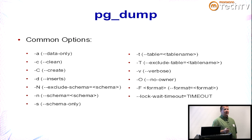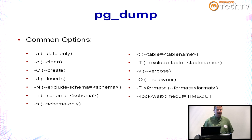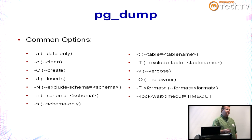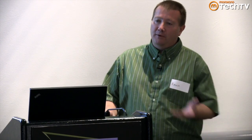Both the tar and custom formats give you the option of restoring via the pg_restore utility, which opens up a world of options in terms of flexibility — what objects, data structures, and data sets you want or don't want to restore. Referential integrity is maintained by pushing all constraints to the end of the dump file, so it restores tables and primary keys first, then data, then all referential integrity.